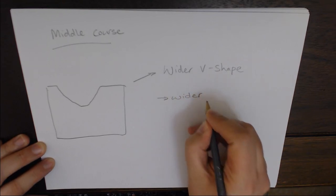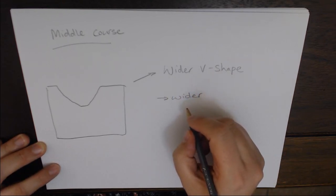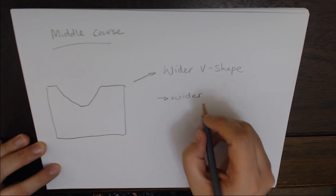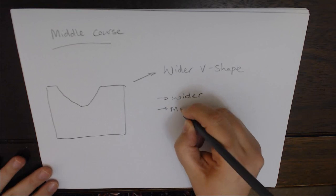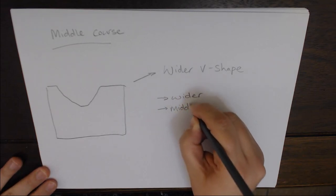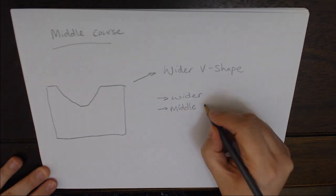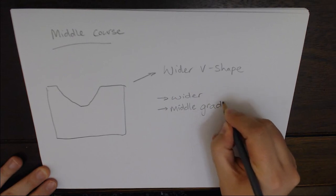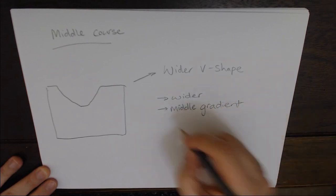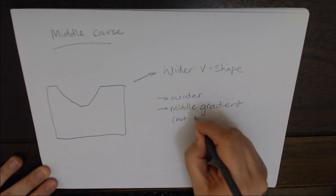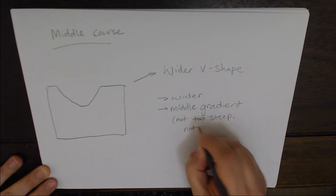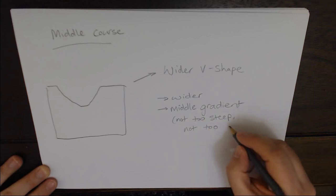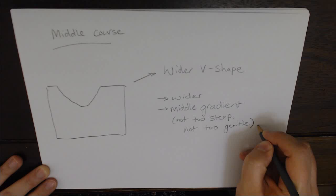What we actually notice with our middle course is we'll start seeing some features that we would normally see in the lower course. So meanders will start to appear in the middle course, but your true meanders and oxbow lakes are going to show up in the lower course. The middle gradient - not too steep and not too flat, not too gentle, just right. That is our middle course of the river.